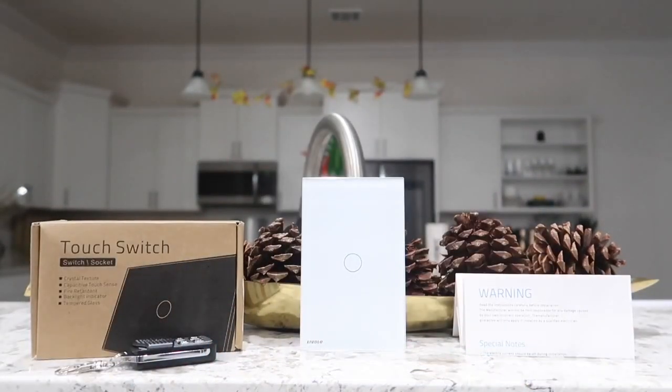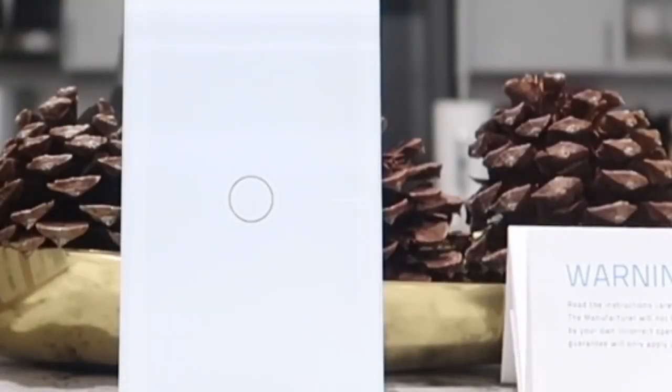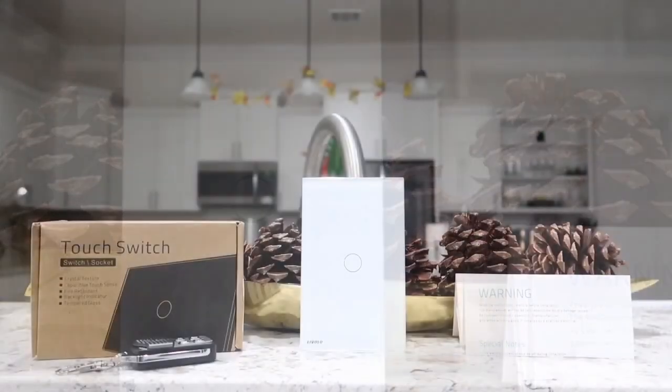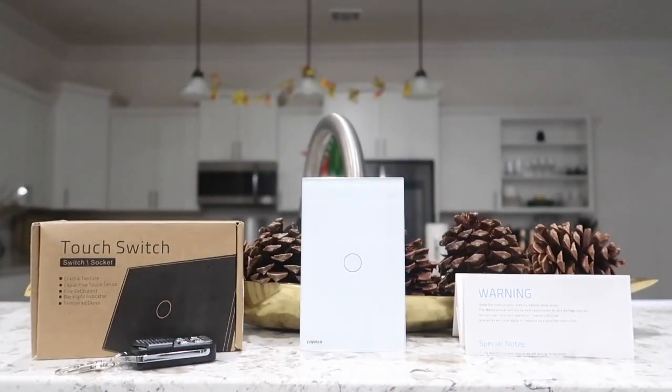There's also a red and blue indicator light on the touch sensor part of the panel here. When the lights are on, the indicator will be red. When the lights are off, the LED indicator is blue which also lets us easily see where the switch is during the dark.